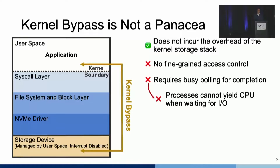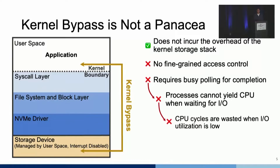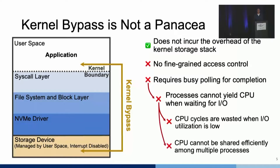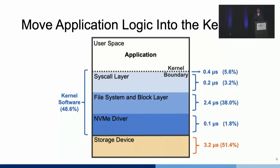However, kernel bypass is not a panacea. It does not incur the overhead of the kernel storage stack, but using kernel bypass also means there is no fine-grained access control because any process can access the device directly. What makes it worse is that it requires busy polling for completion because the interrupt of the storage device is disabled. That means processes cannot yield CPU when waiting for I/O, wasting CPU cycles when I/O utilization is low, and CPU cannot be shared efficiently among multiple processes.